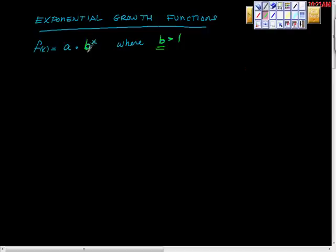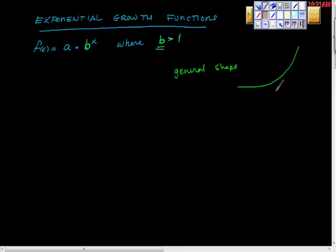If this value b — the one hooked to the exponential variable — has a value greater than 1, we have growth. Growth has a general shape: it kind of starts out flat and then hooks up like this, continuing to go up.